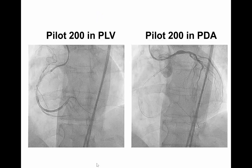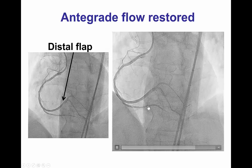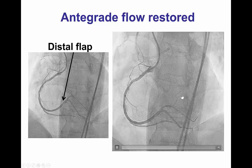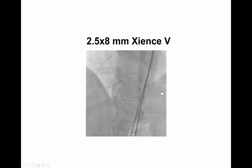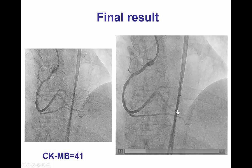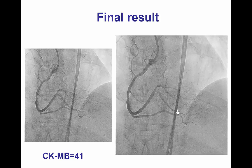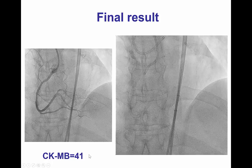This is a challenging situation with many potential ways to deal with it. Retrograde access was not available to any of those branches. What we did was take a stiff polymer-jacketed wire, a Pilot 200, advance it into all three branches, and perform balloon angioplasty. We were fortunately able to restore antegrade flow in all three branches, although there was still dissection in several planes, including a large dissection flap in the distal right coronary artery, which was treated with placement of another drug-eluting stent. We restored TIMI-3 flow in all branches; the patient's chest discomfort and EKG changes resolved, though the patient did have a periprocedural myocardial infarction with an increase in CK-MB.